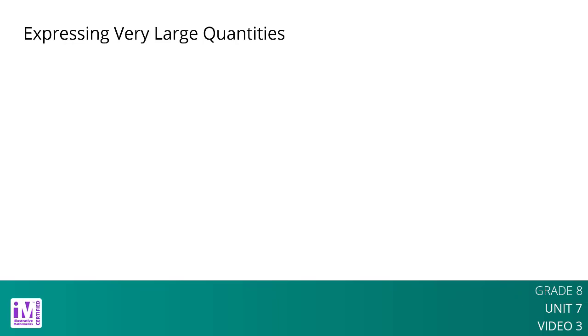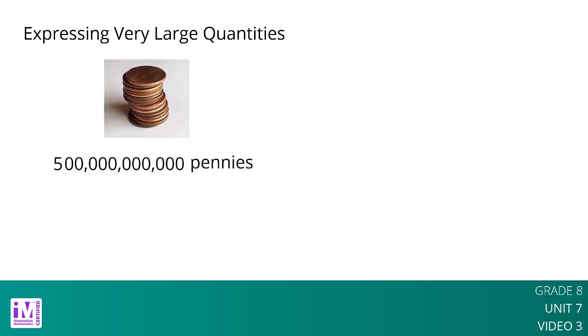Sometimes powers of 10 are helpful for expressing quantities, especially very large or very small quantities. For example, the United States Mint has made over 500 billion pennies. In order to understand this number, we have to count all the zeros.